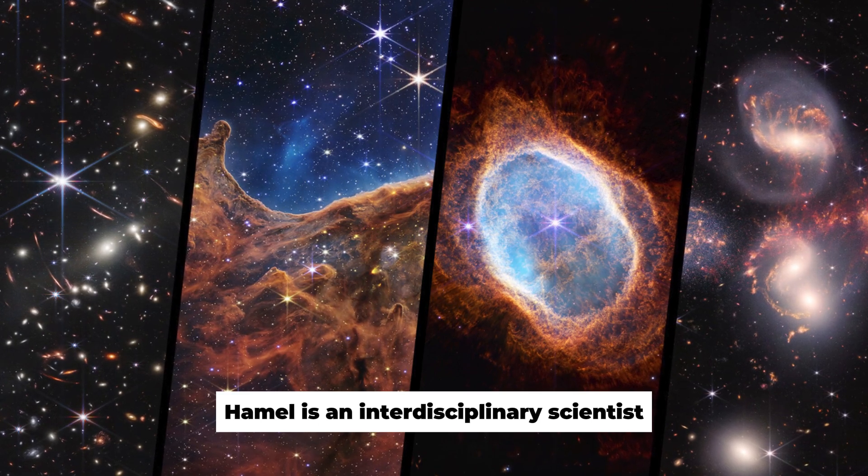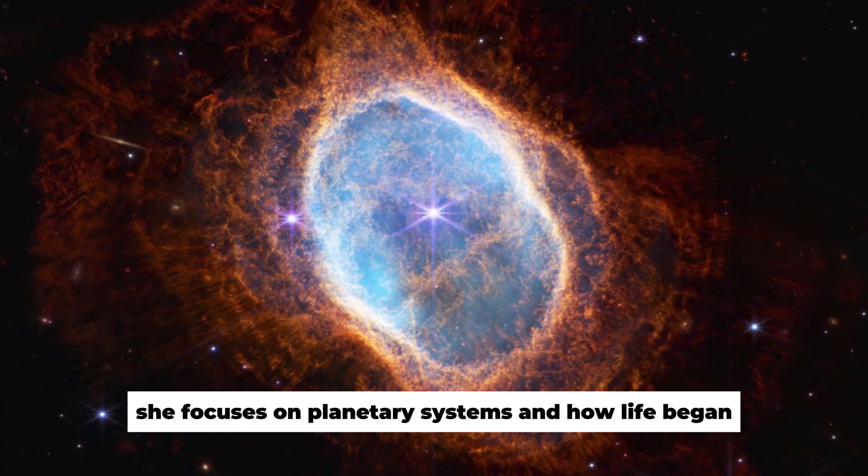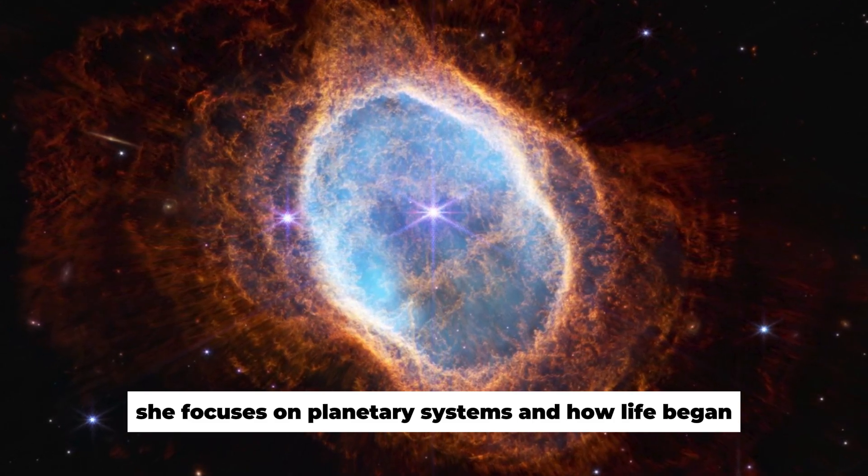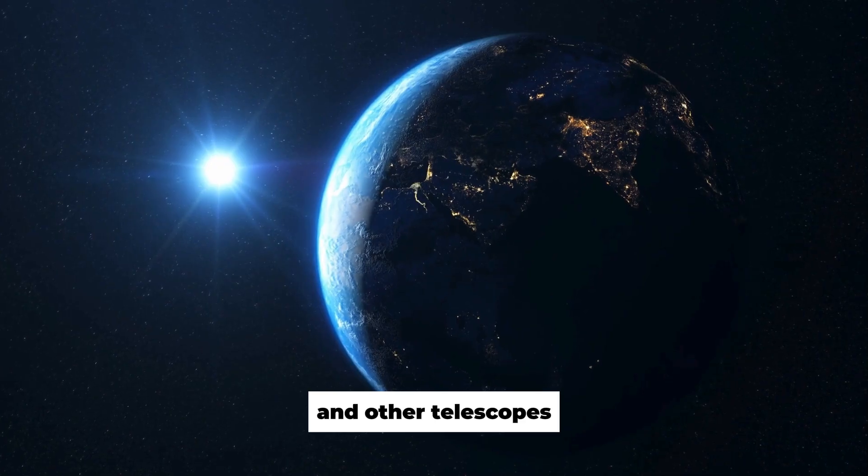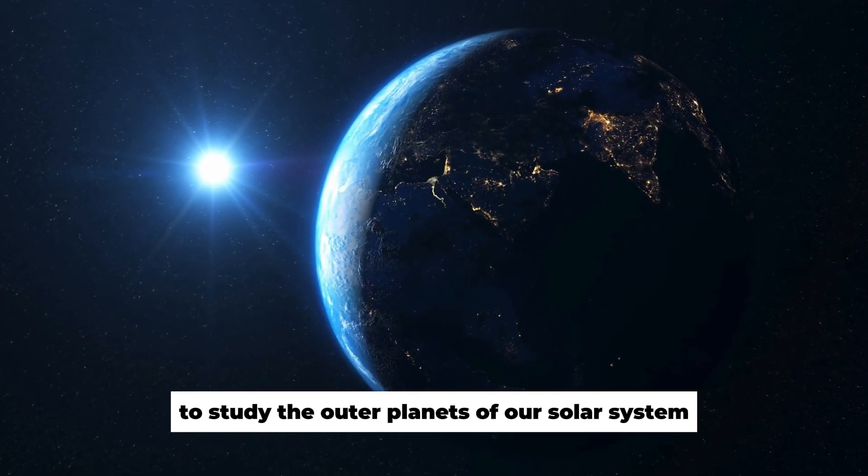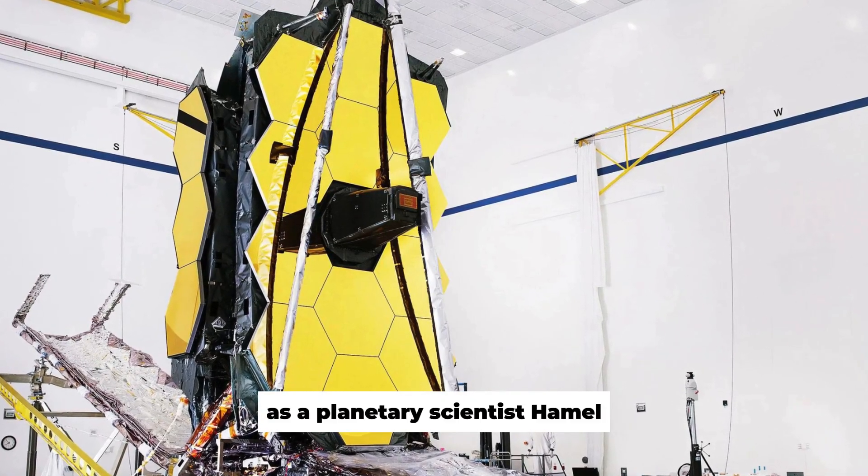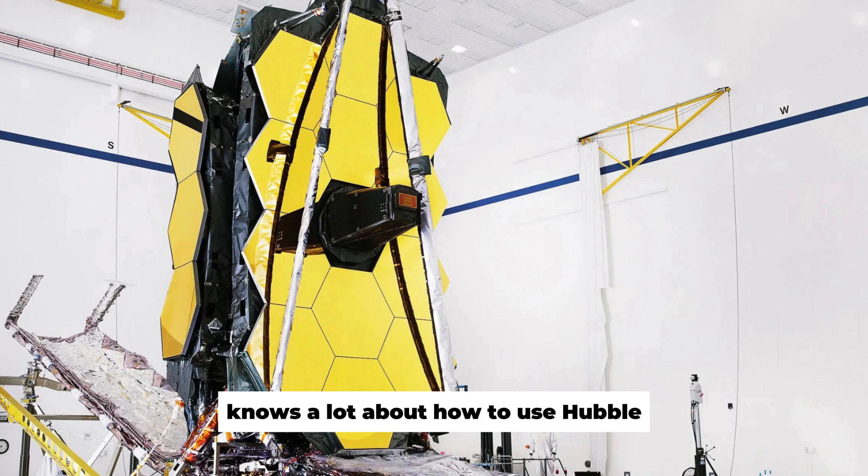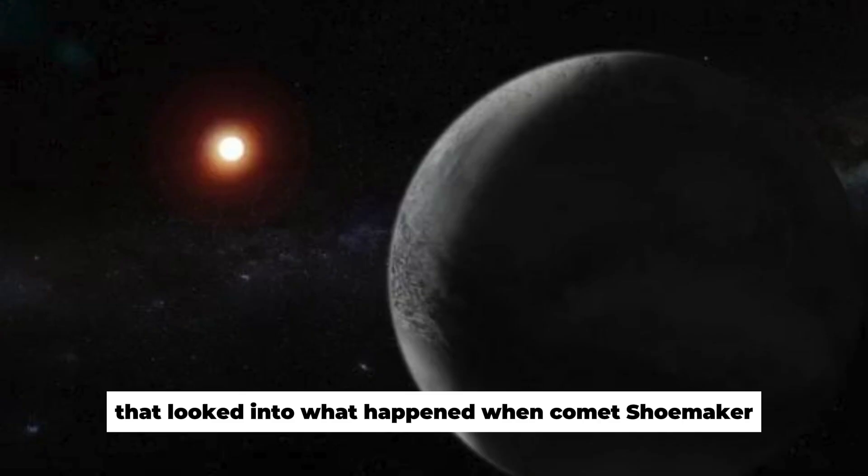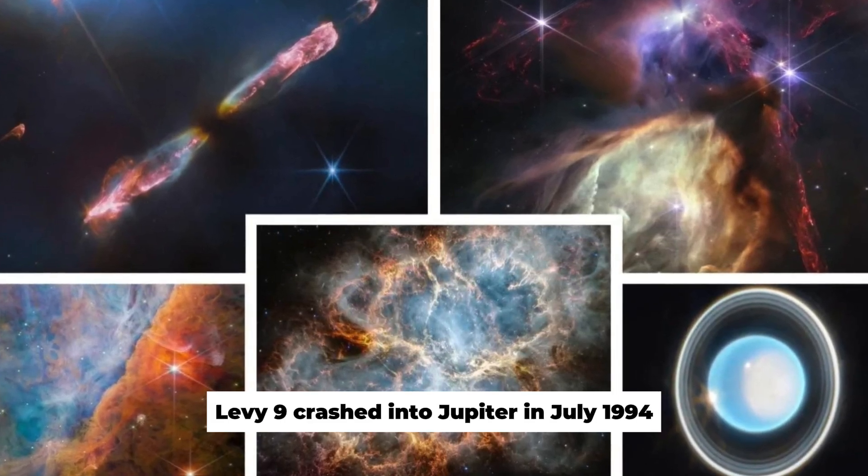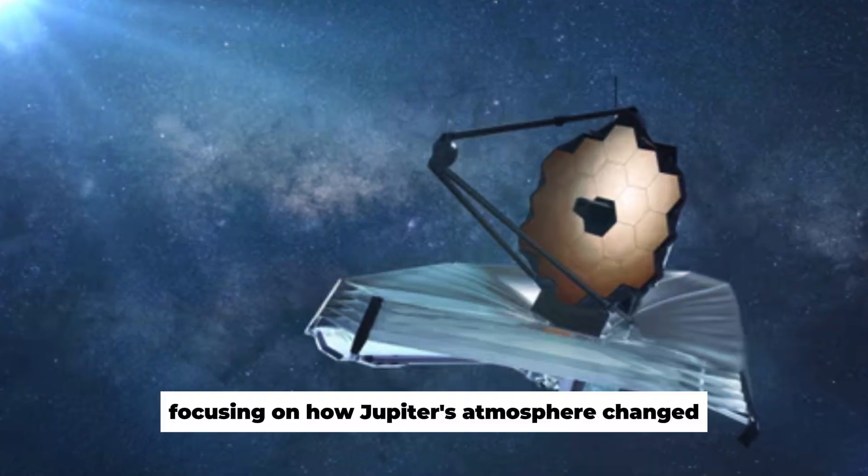Hamel is an interdisciplinary scientist who works on the James Webb Telescope project. She focuses on planetary systems and how life began. She has used the Gemini, Hubble, Keck, Spitzer, and other telescopes to study the outer planets of our solar system, as well as their rings and moons. As a planetary scientist, Hamel knows a lot about how to use Hubble to look at the solar system. She was in charge of the Hubble team that looked into what happened when Comet Shoemaker Levy 9 crashed into Jupiter in July 1994, focusing on how Jupiter's atmosphere changed.